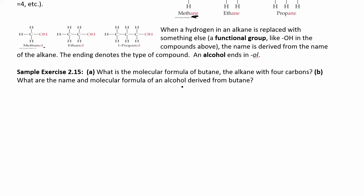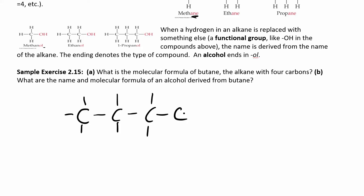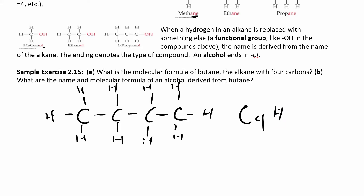Let's write the molecular formula for butane. Butane means four carbons. Each carbon needs four bonds. The first carbon gets three hydrogens, the middle two each get two, and the last gets three. Counting up: four carbons, and two plus two plus two plus two plus one plus one plus one plus one... totaling ten hydrogens. So butane is C4H10.